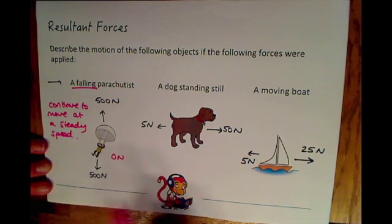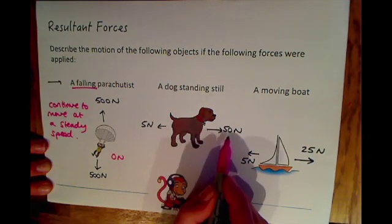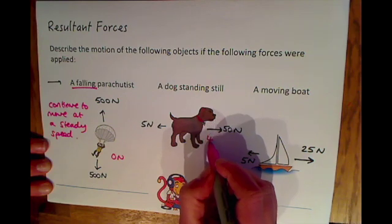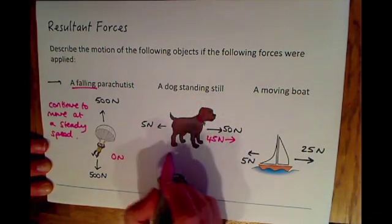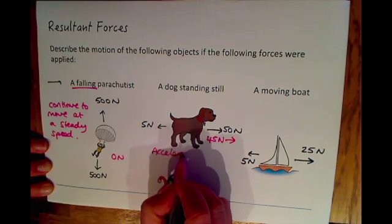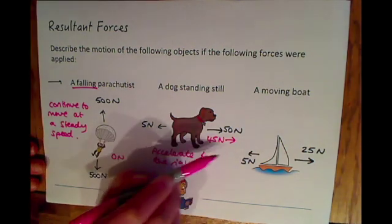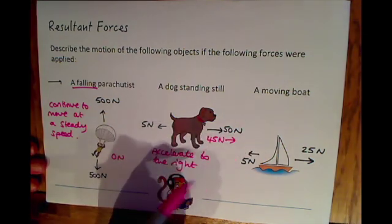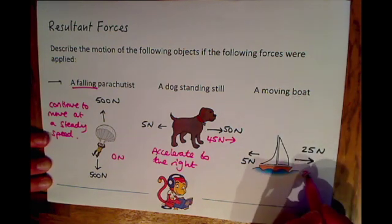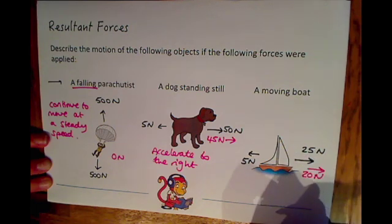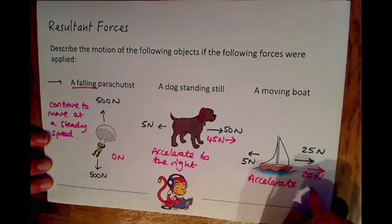In the second scenario, the dog starts standing still. It has 50 newtons in one direction and 5 newtons in the other, giving a resultant force of 45 newtons to the right. Therefore, starting from still, he would accelerate to the right and start to speed up in that direction. For the final option, the moving boat has a resultant force of 20 newtons to the right — it's already moving and will therefore accelerate to the right.